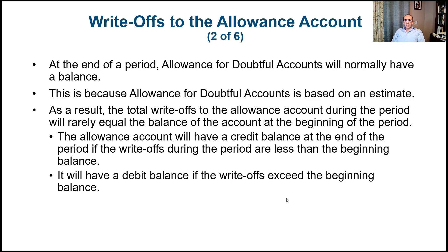At the end of the period, the allowance for doubtful accounts will normally have a balance — either debit or credit. We'll end up with a credit balance if actual write-offs were less than what we estimated, or a debit balance if we experience more bad debts than anticipated. Because allowance for doubtful accounts is based on an estimate, the total write-offs will rarely equal the beginning balance.